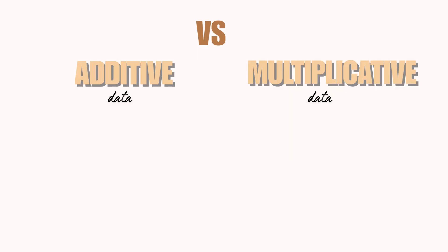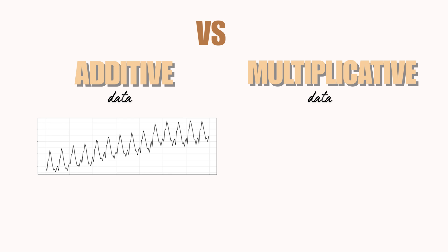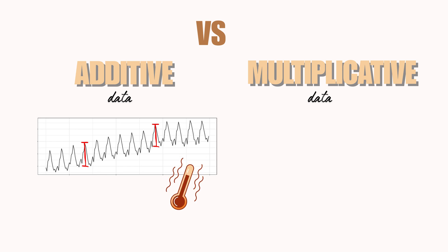And this is exactly the difference between multiplicative and additive data. Additive seasonality occurs when the seasonal variation remains relatively constant over time, regardless of the overall level of the series. For example, daily or monthly temperature readings often display additive seasonality — the difference between summer and winter temperatures tends to remain fairly constant from year to year, even if we have a gradual warming or cooling trend.